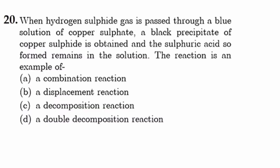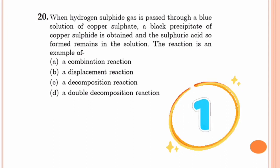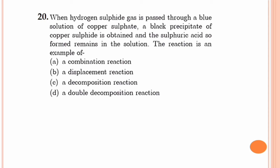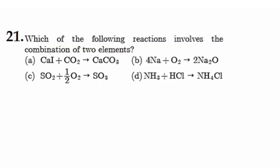Question number 20. When hydrogen sulphide gas is passed through a blue solution of copper sulphate, a black precipitate of copper sulphide is obtained and sulphuric acid remains in the solution. The reaction type? Writing the equation: H2S + CuSO4 gives CuS + H2SO4. Analyzing the equation, the reactants have exchanged ions — the sulphide and sulphate ions have been exchanged. Whenever there is an exchange of ions, it indicates a double decomposition reaction. So the option is option D, double decomposition reaction.